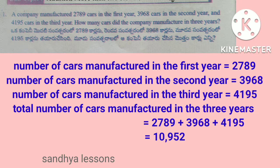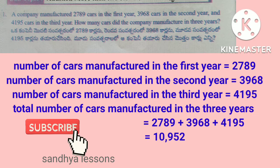Solution: Number of cars manufactured in the first year is 2,789. Number of cars manufactured in the second year is 3,968. Number of cars manufactured in the third year is 4,195. Therefore, total number of cars manufactured in 3 years is 10,952.